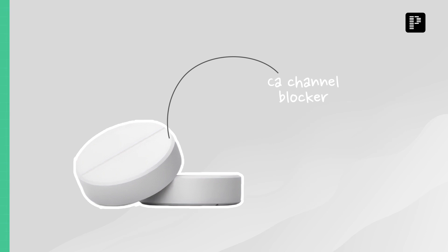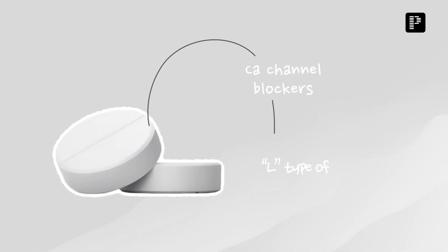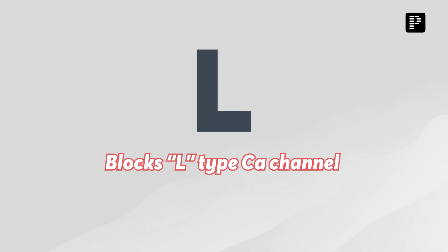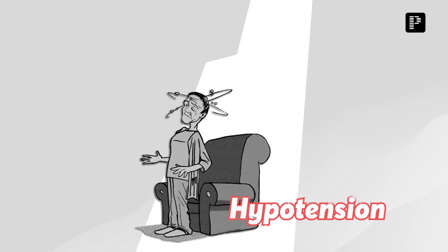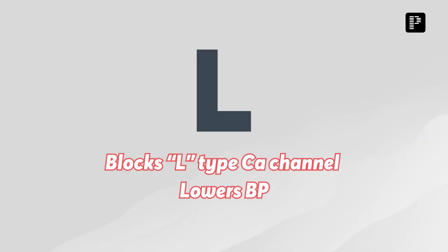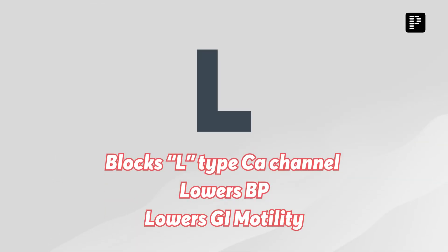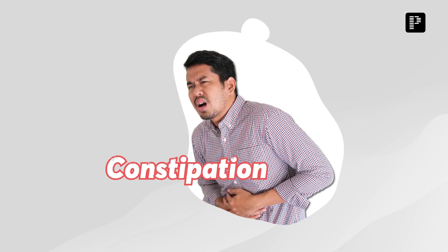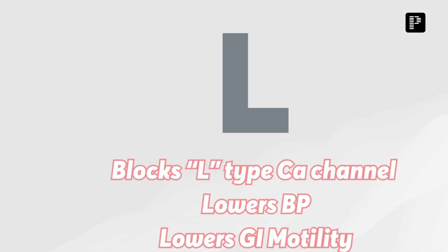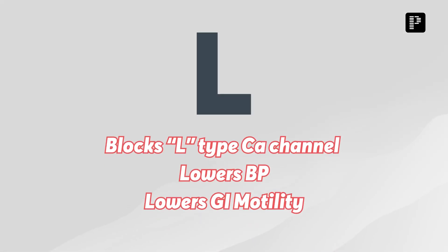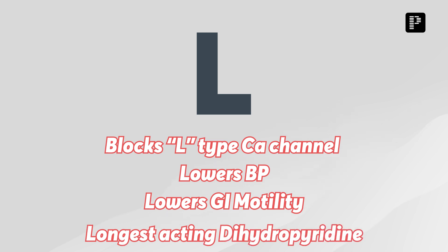M for mechanism of action — it's a calcium channel blocker. Which type? The next letter is L, so it blocks the L-type calcium channel. Another importance of L is it lowers BP, that's why it has an anti-hypertensive effect, and the adverse effect of lowering BP is hypotension. It also lowers GI motility, that's why amlodipine can cause constipation.